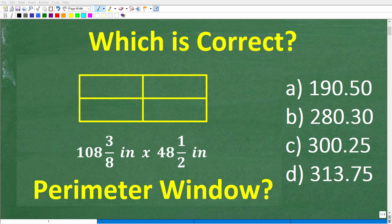Okay, so let's see if you can solve this math problem without using a calculator. The question is we want to calculate the perimeter of this rectangular window. Now the dimensions of this window are 108 3⁄8 inches by 48 1⁄2 inches.